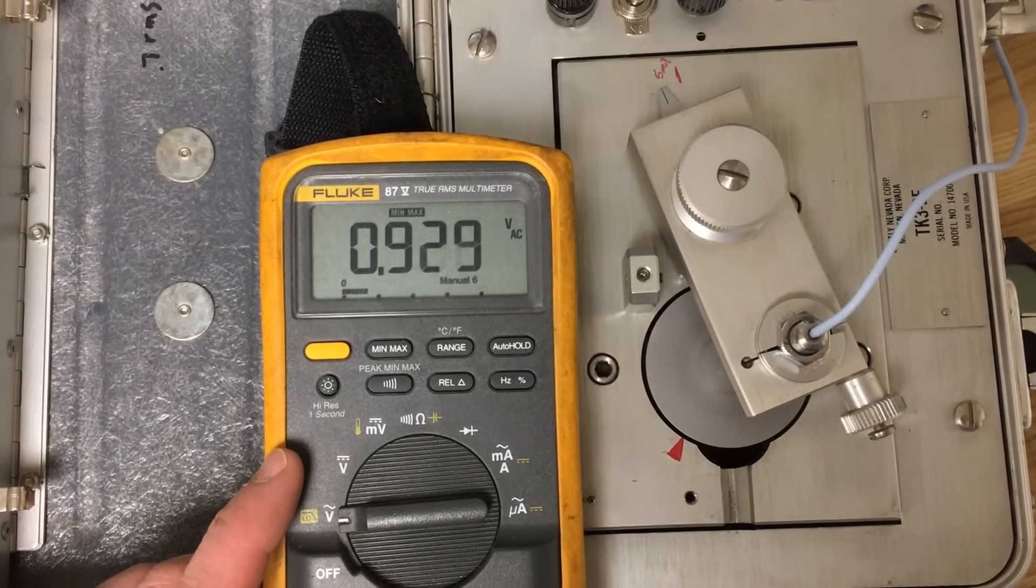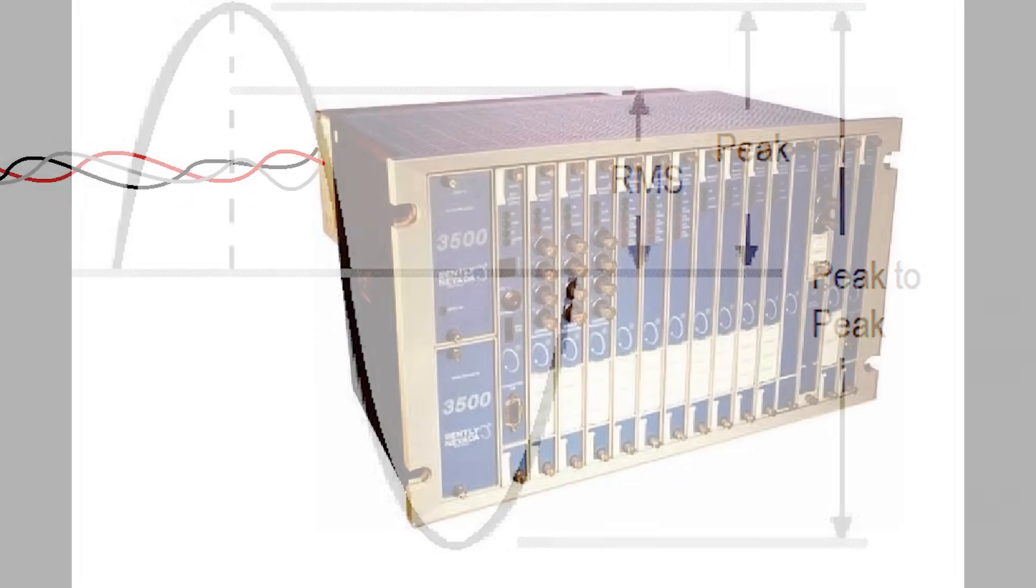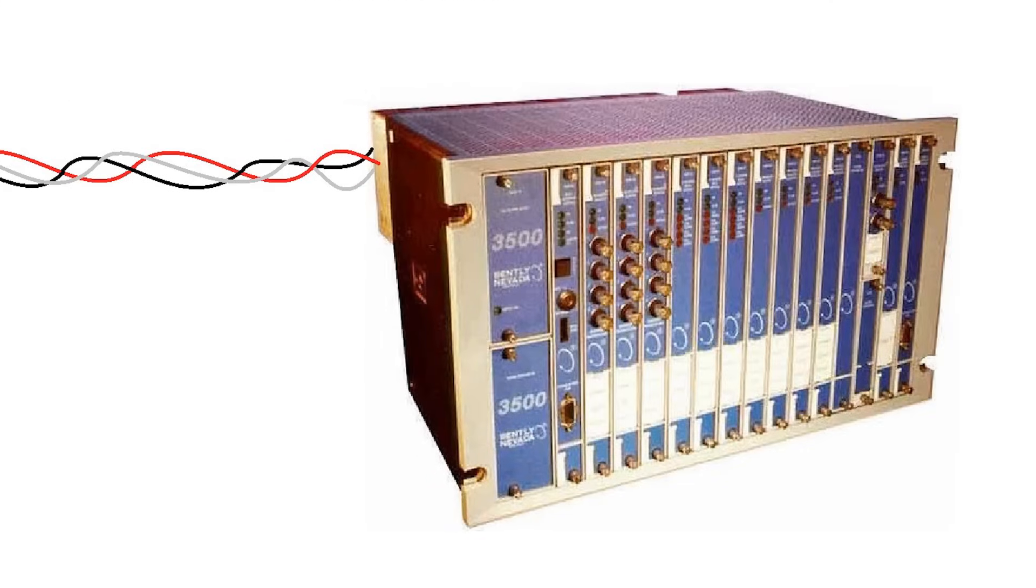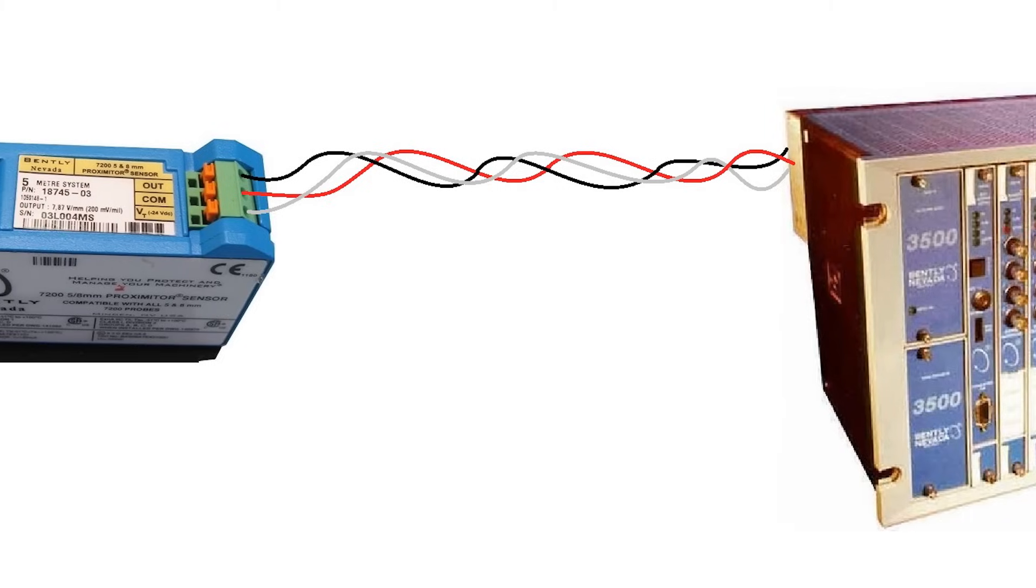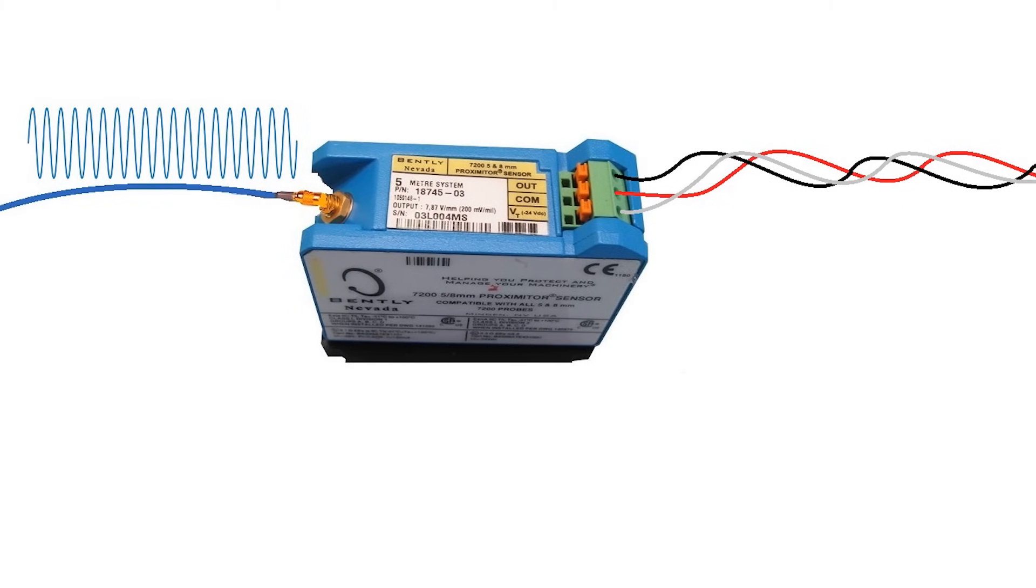However, due to the manner in which a basic voltmeter captures AC measurements, some math needs to be used to convert this to a usable vibration measurement. This process will be covered in a later video during the dynamic test demonstration. The proximity monitoring card, which is connected to the output voltage terminals of the proximitor, will automatically convert this AC voltage to a total shaft travel value in the unit of mils.